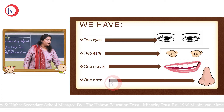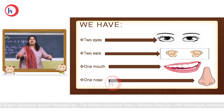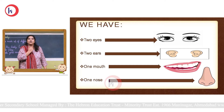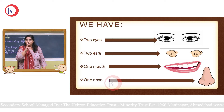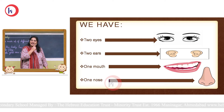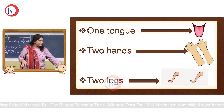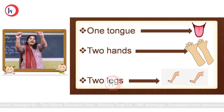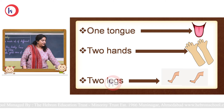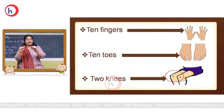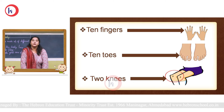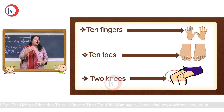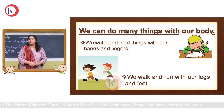We have two eyes, two ears, one mouth, one nose, one tongue, two hands, two legs, ten fingers, ten toes, and two knees. All these parts help us in our daily routine life. Let's learn how they help us.